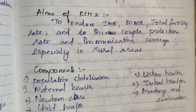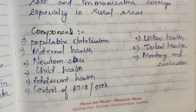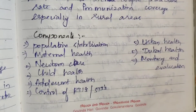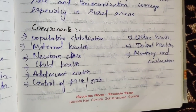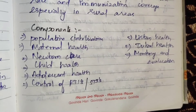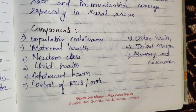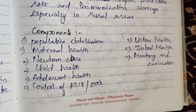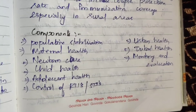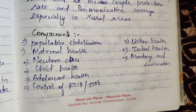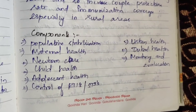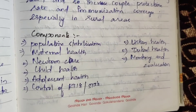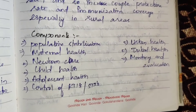The components of RCH Phase 2 include: population stabilization, maternal health, newborn care, child health, adolescent health, control of RTIs and STDs, urban health, tribal health, and monitoring and evaluation.